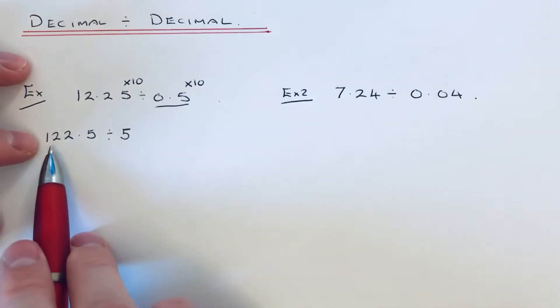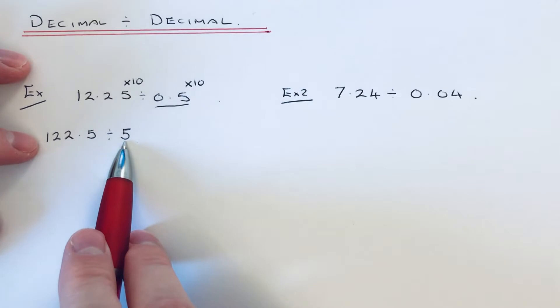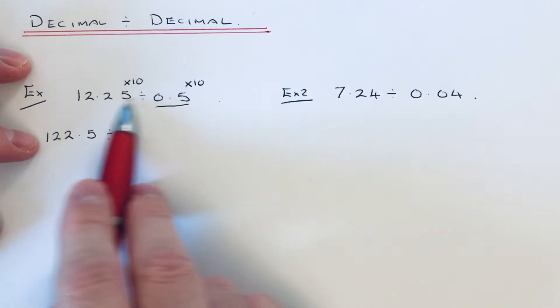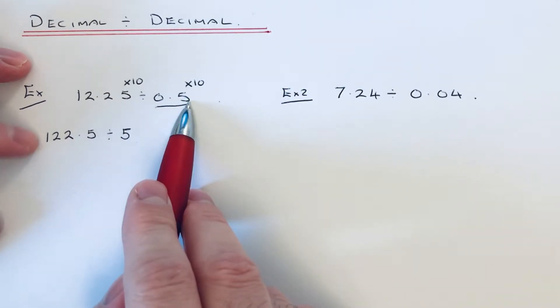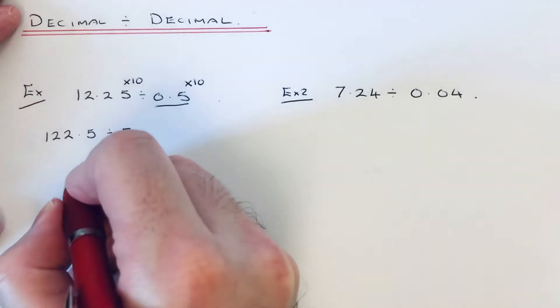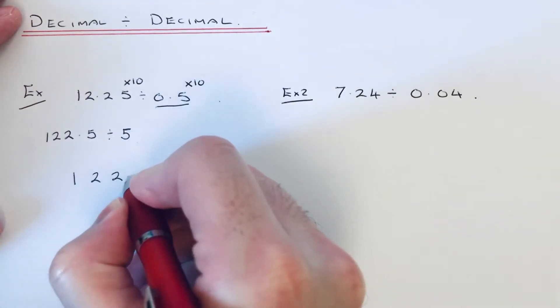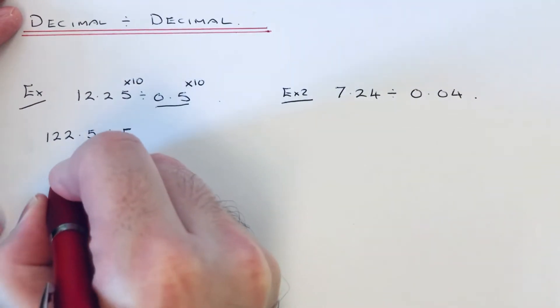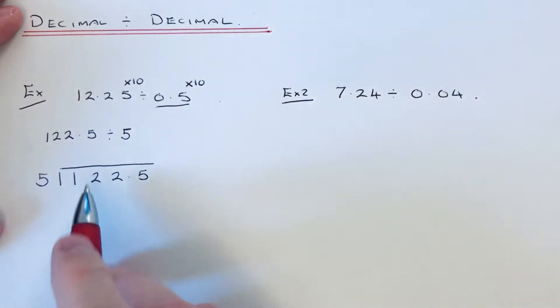So if we work out this division now, this will be the same answer as the first division. Let's use short division to work out the answer.